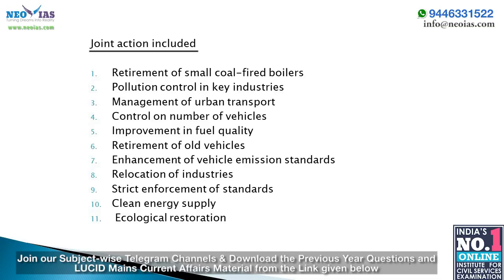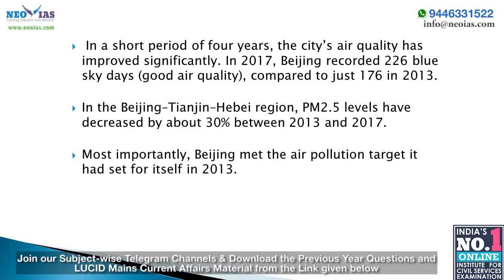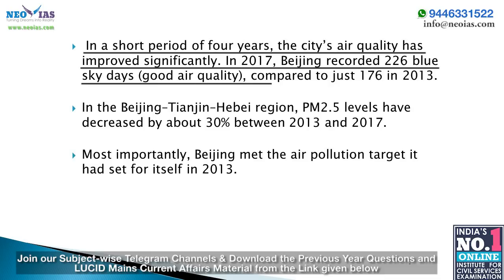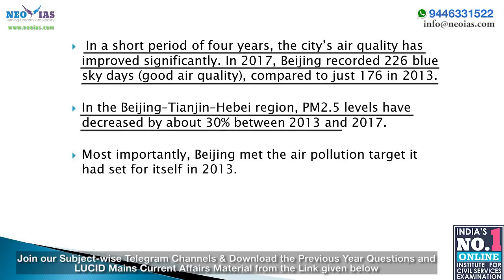As a result, in just 4 years the city's air quality improved significantly. In 2017, Beijing recorded 226 blue sky days — meaning good air quality days — compared to just 176 in 2013. In the Beijing-Tianjin-Hebei region, PM2.5 levels decreased by about 30% between 2013 and 2017. Most importantly, Beijing met the air pollution target it had set for itself in 2013.